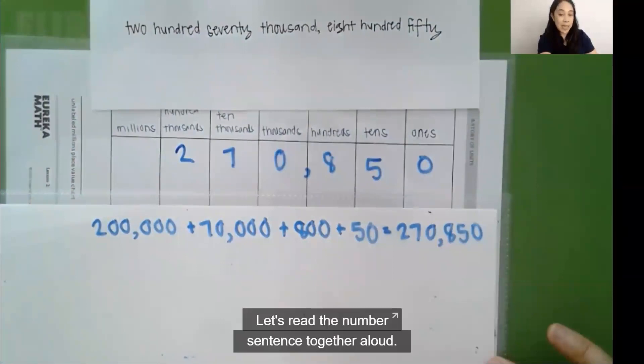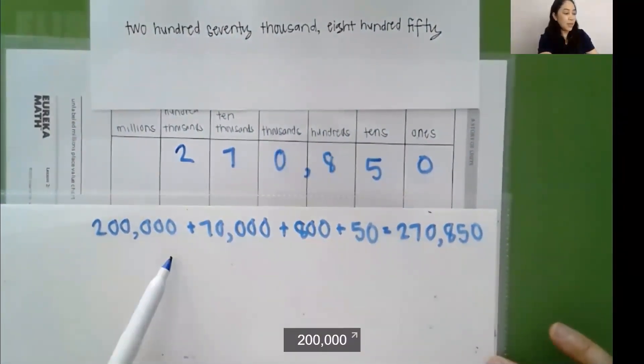Let's read the number sentence together aloud. 200,000 plus 70,000 plus 800 plus 50 equals 270,850.